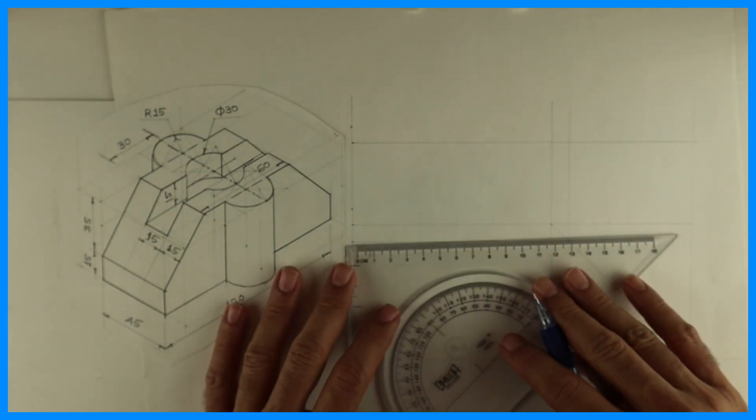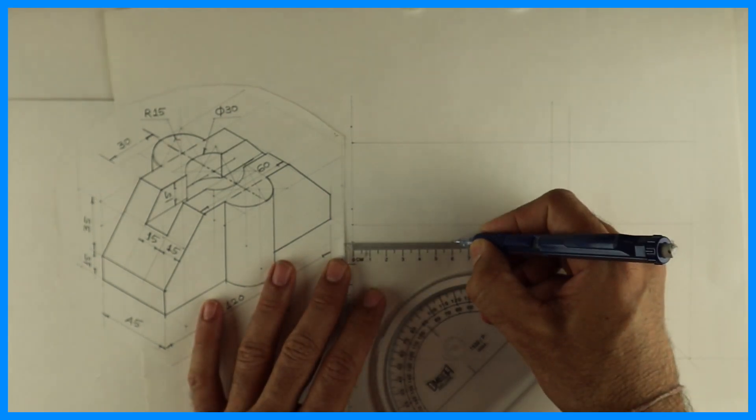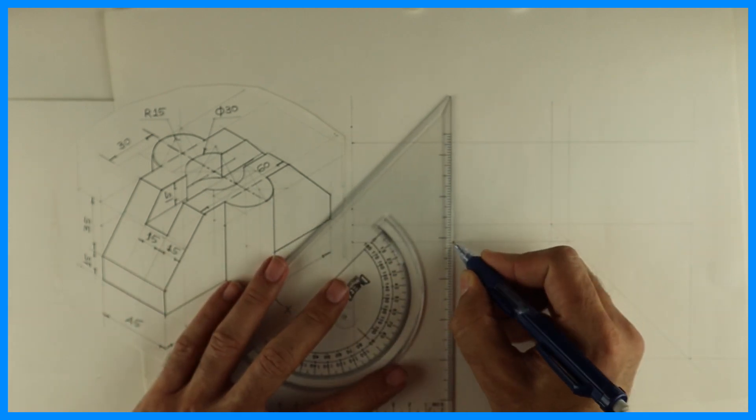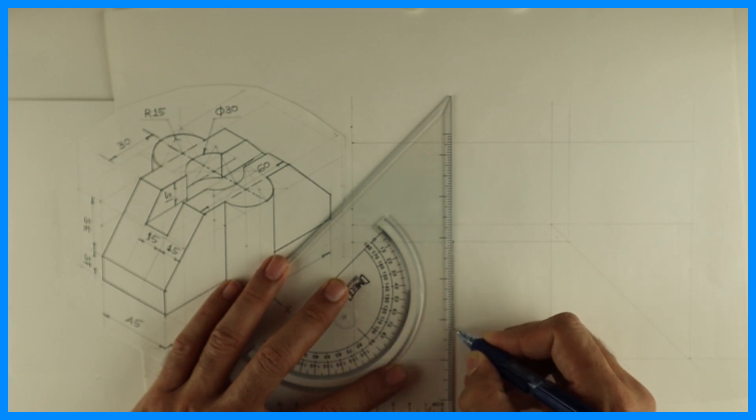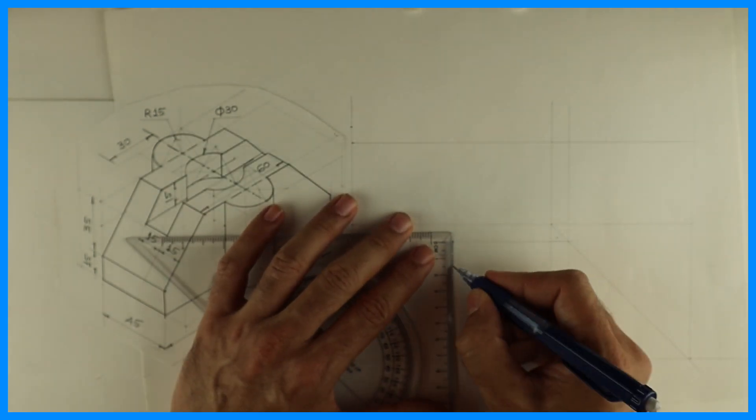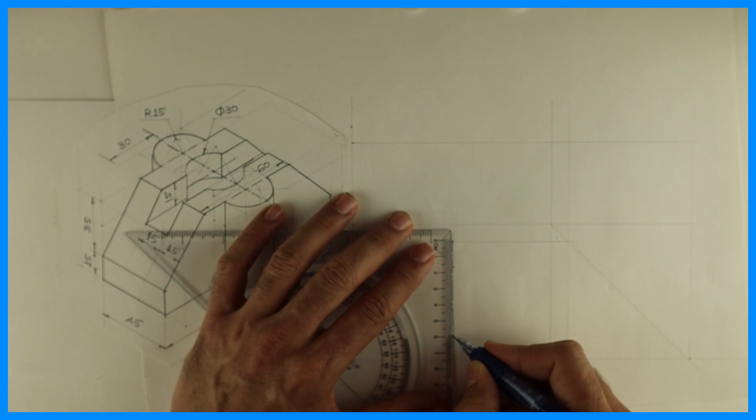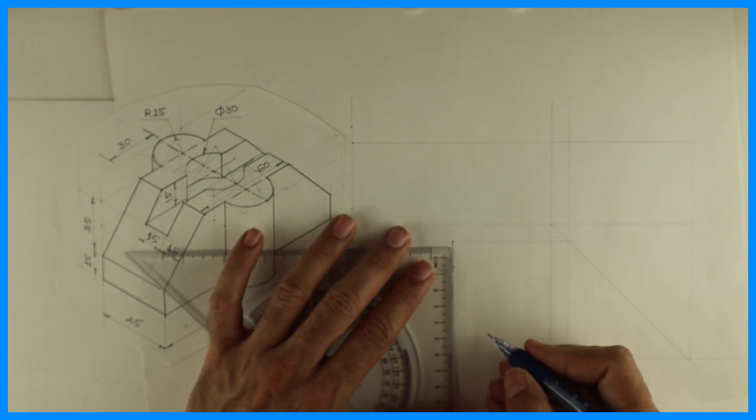Take half of 120. Then you go down by 15. You can draw a centerline. Then you take the midpoint also.